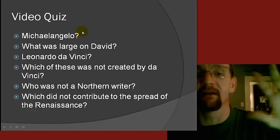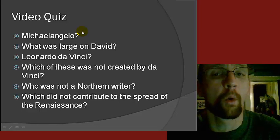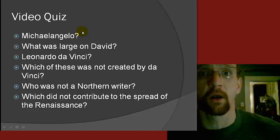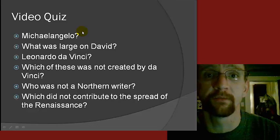Number five: which of the following was not a Northern Renaissance writer? Was it A, Erasmus; B, Dante; C, Thomas More; or D, William Shakespeare?